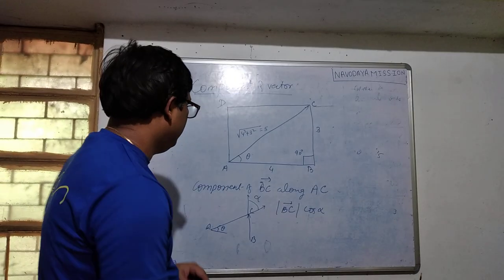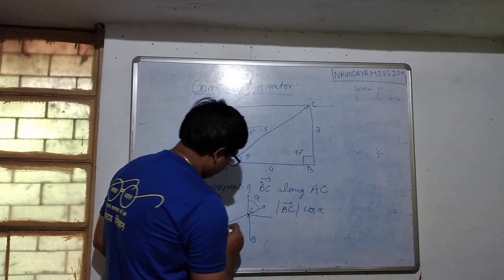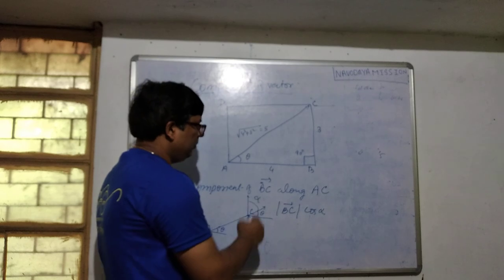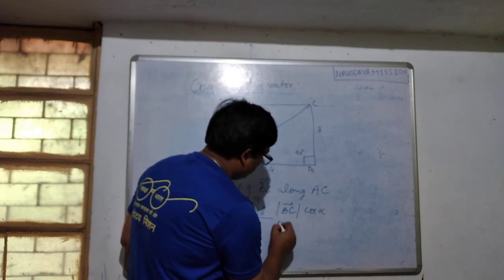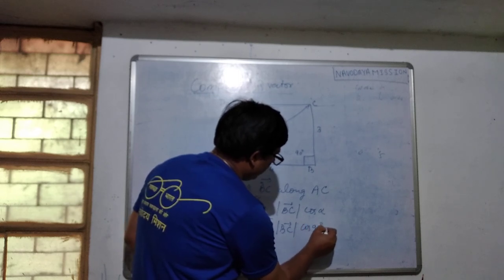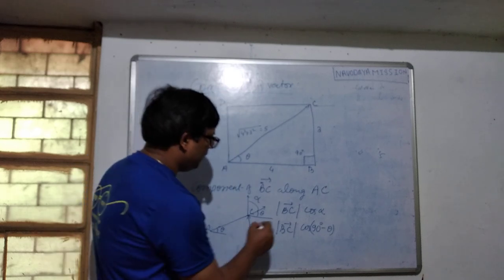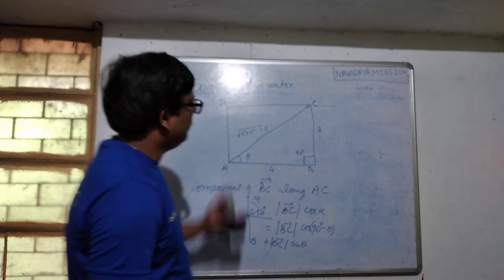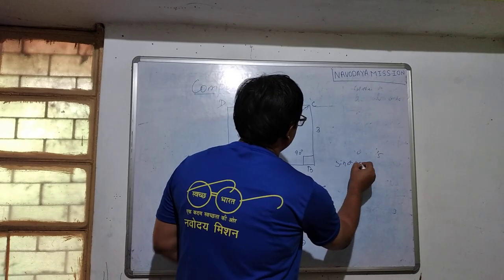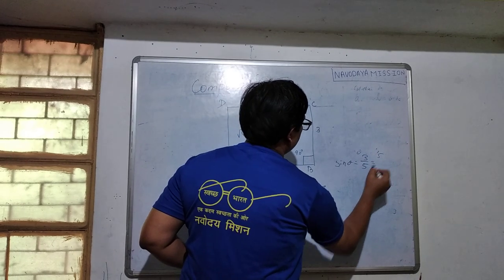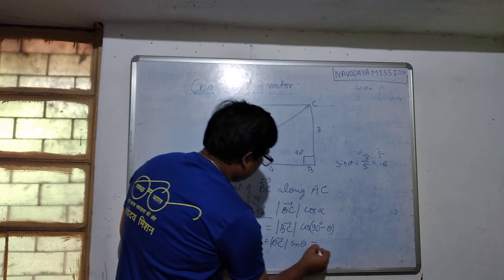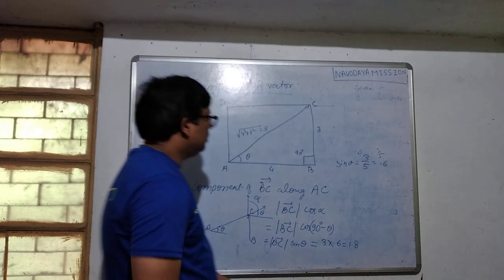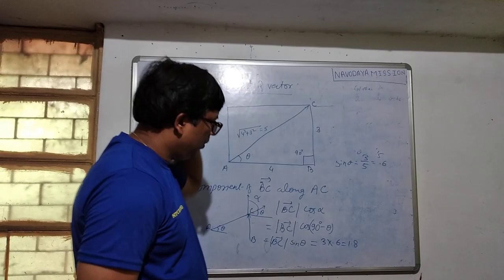BC is 3. What is cos alpha? Since this is a rectangle, theta is the angle at A, so alpha = 90° − theta. Therefore the component is BC × cos(90° − theta) = BC × sin theta. Sin theta = BC / AC = 3/5 = 0.6. So the component is 3 × 0.6 = 1.8. The component of BC along AC is 1.8.